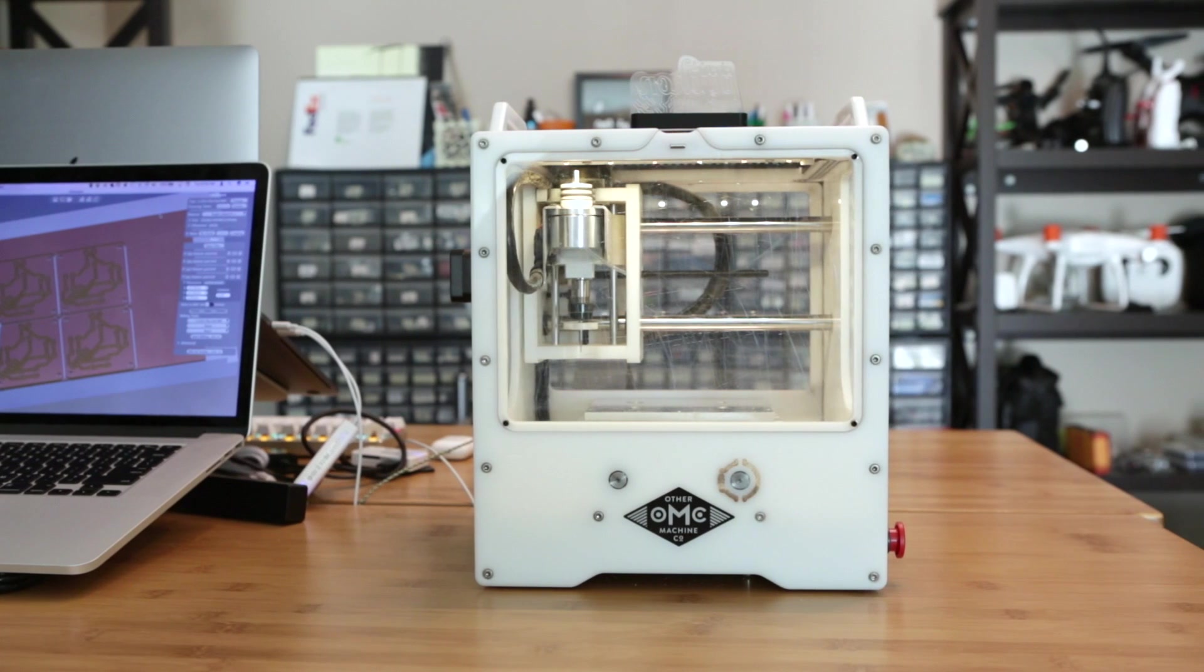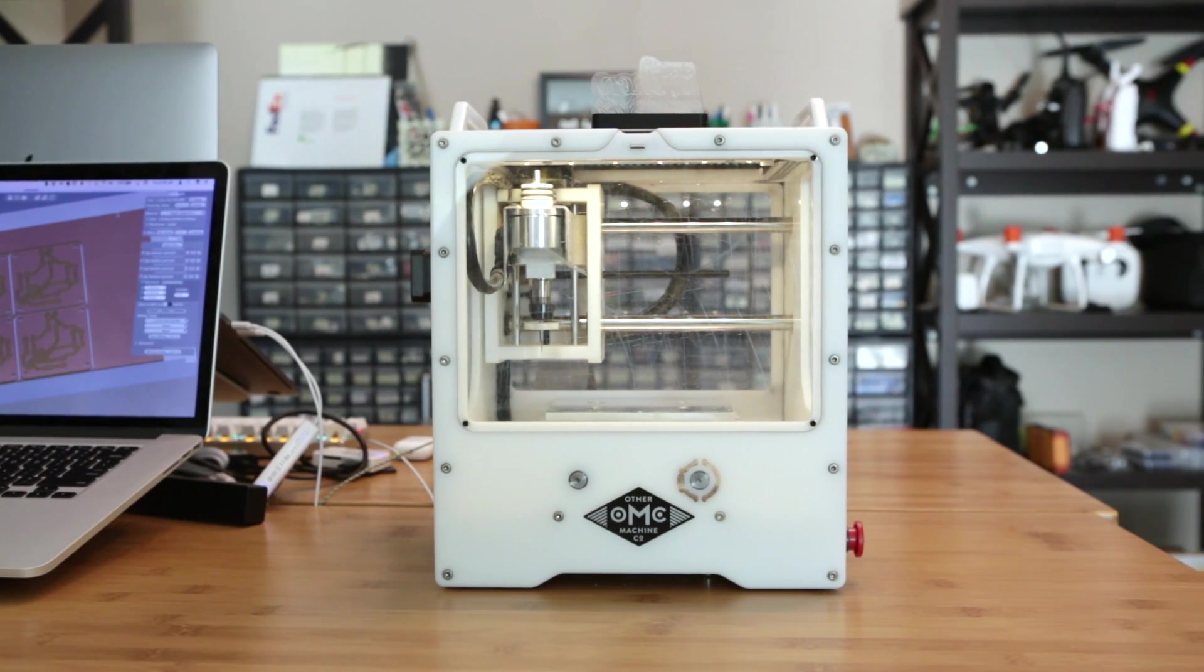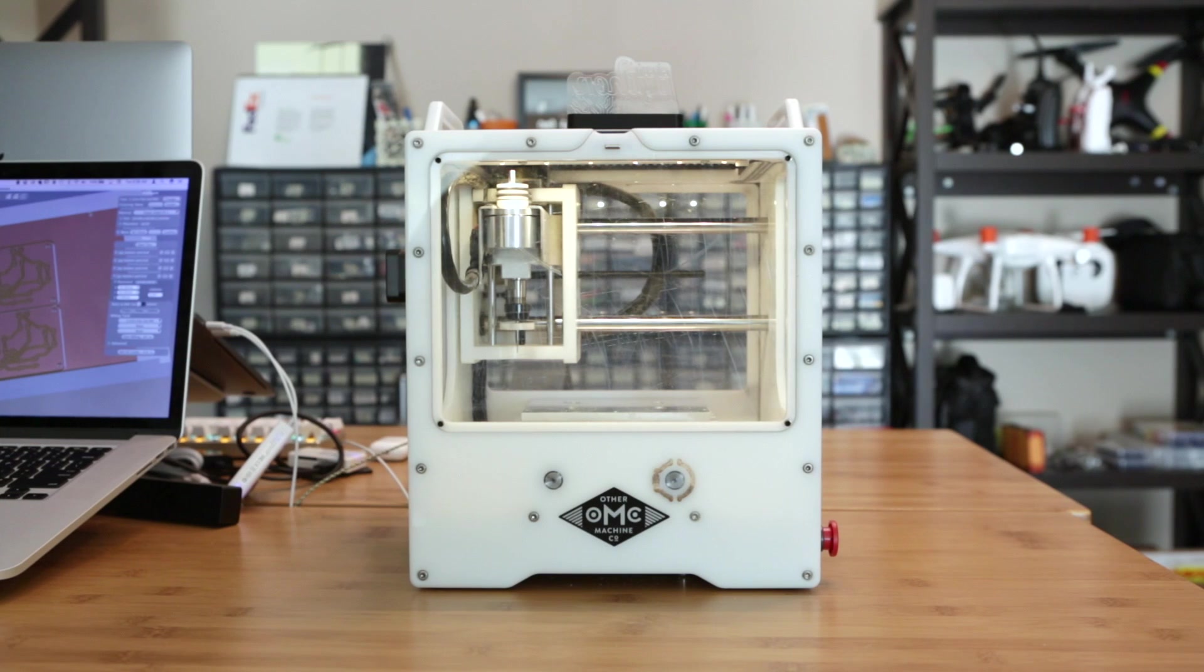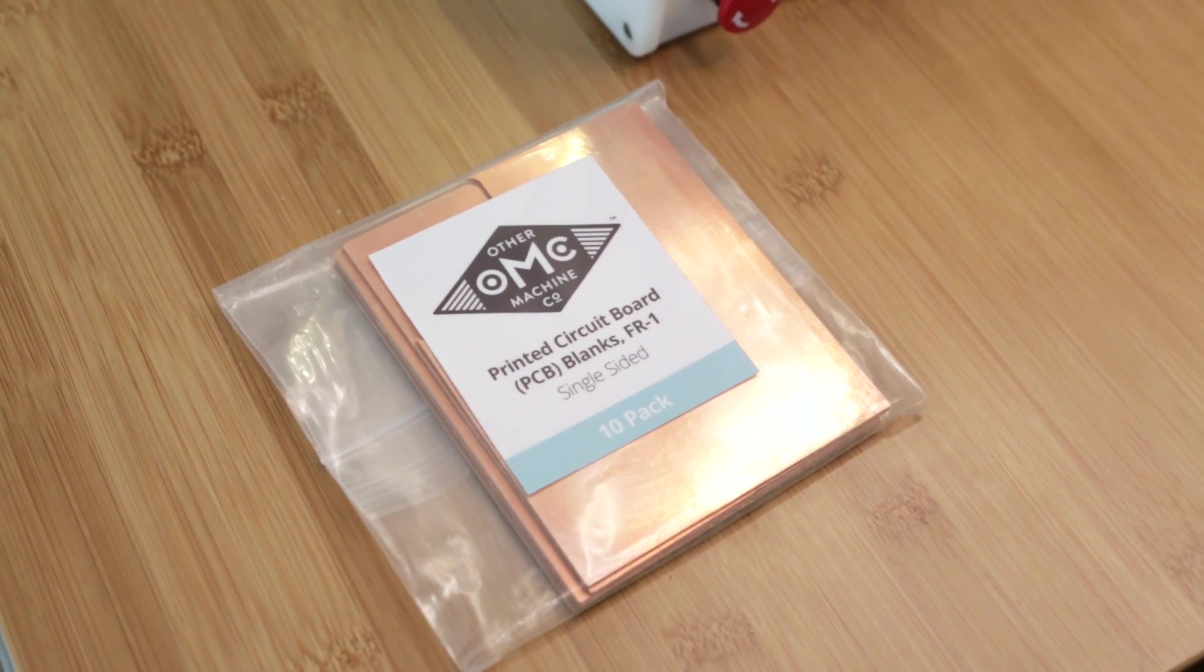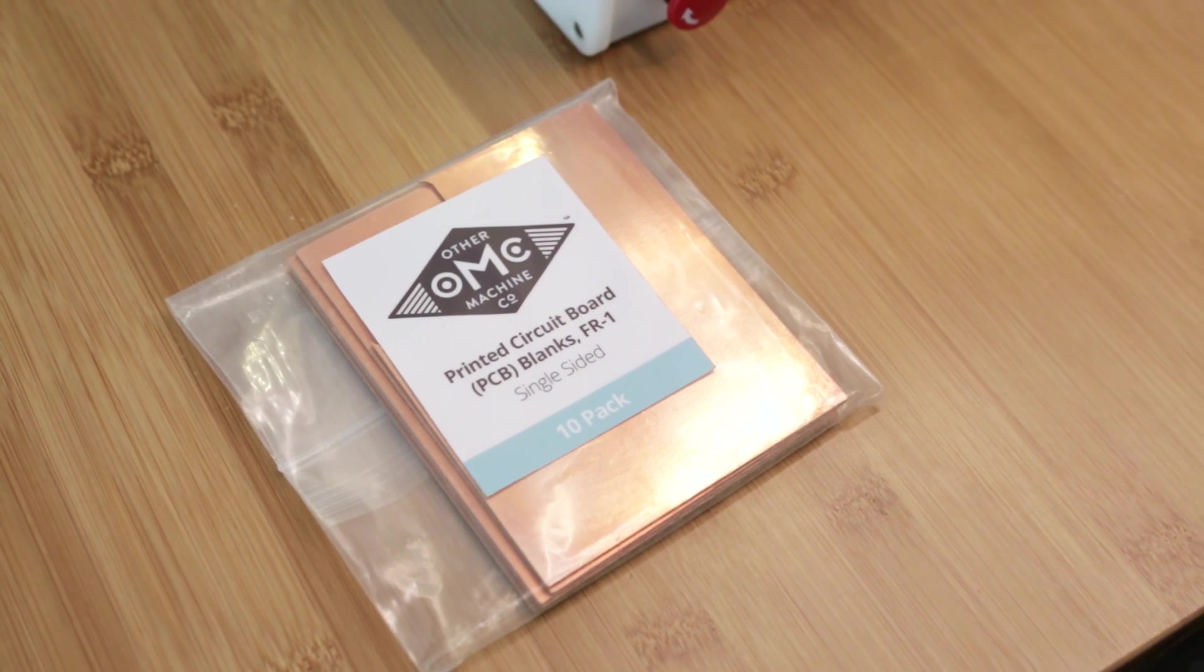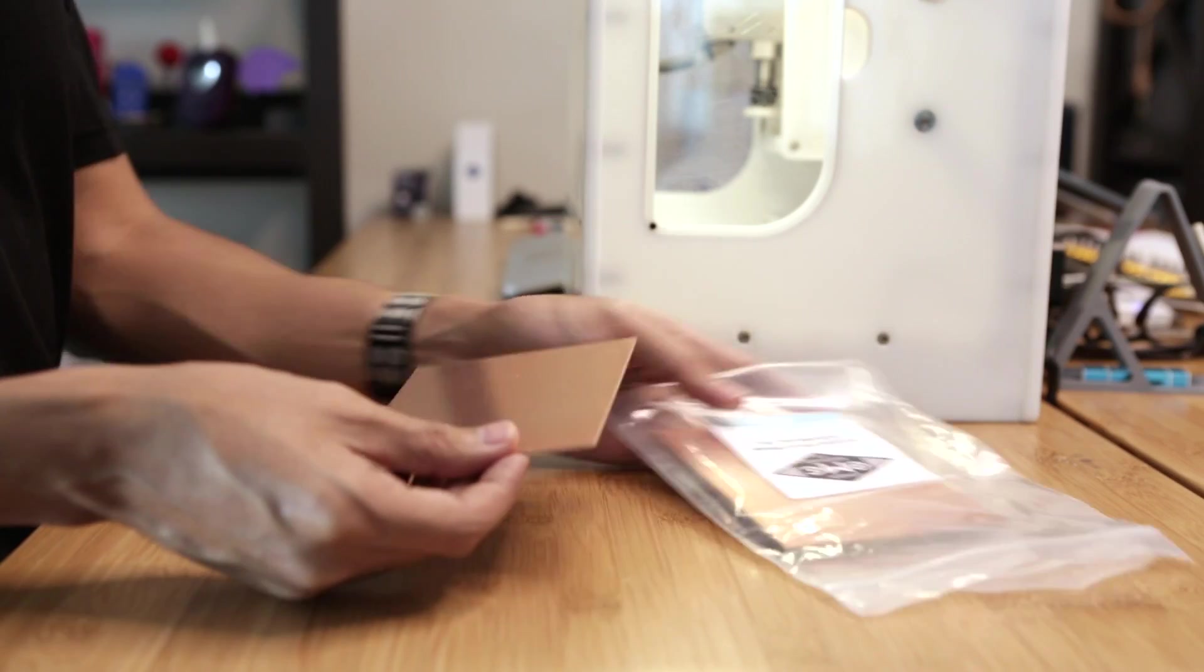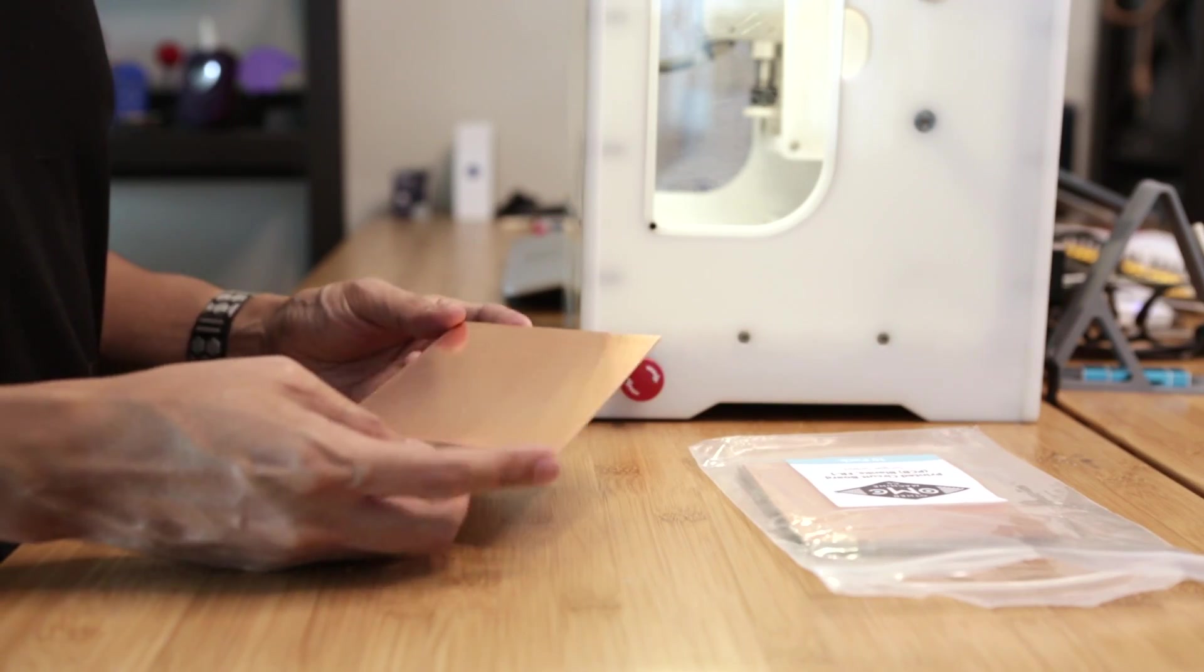The Othermill is a really nice CNC mill that's great for making quick prototypes and at Adafruit we use it to make all of our testers. These FR1 blanks from OMC are pre-cut and come in a pack of 10. They're great for making single-sided PCBs and are pretty easy to work with.